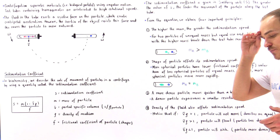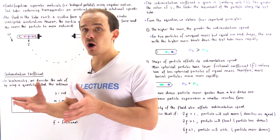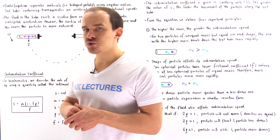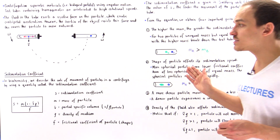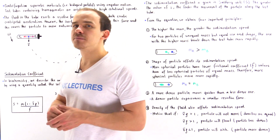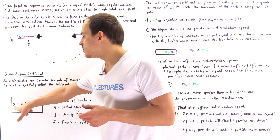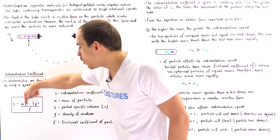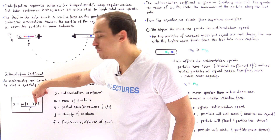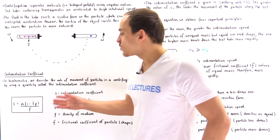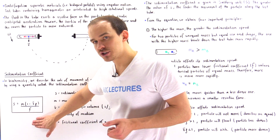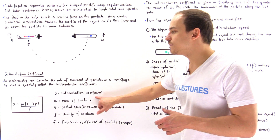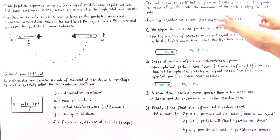The next question is: how exactly do we describe the rate at which different particles move inside our rotating test tube during centrifugation? In biochemistry, we describe the rate of movement of particles by using a quantity known as the sedimentation coefficient, given by the lowercase s. The equation is: s equals the mass of that particle multiplied by (1 minus v-bar multiplied by rho), divided by f. In the next lecture, we will use physics to derive this equation. The sedimentation coefficient s is given in units known as Svedberg units.